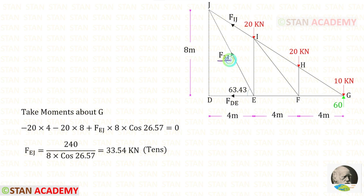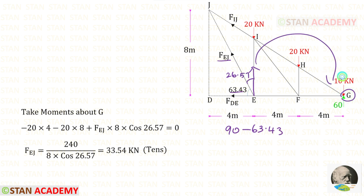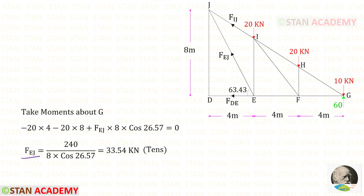We have to resolve FeJ. We can keep it in the vertical direction. To keep it in the vertical direction, we need this angle, which is 90 minus 63.43, giving us 26.57°. About point G, FeJ is acting in the clockwise direction so it will be positive. The distance is 8 and we have to multiply with cos 26.57. For FeJ, we will get a positive value, meaning it is tensile.